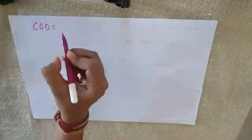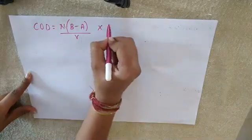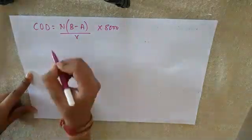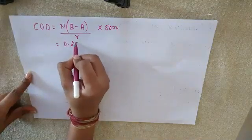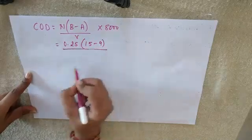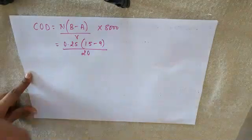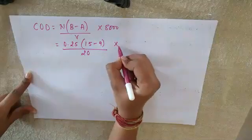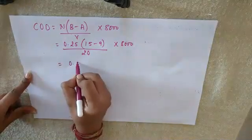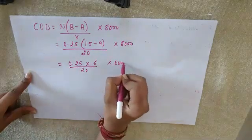Now we know the COD formula. COD is equals to N × (B − A) / V × 8000. So what is N? It is 0.25. Then B is 15, A is 9, divided by V which is 20 ml, into 8000. So this is going to be 0.25 × (15 − 9), which is 6, divided by 20 × 8000.